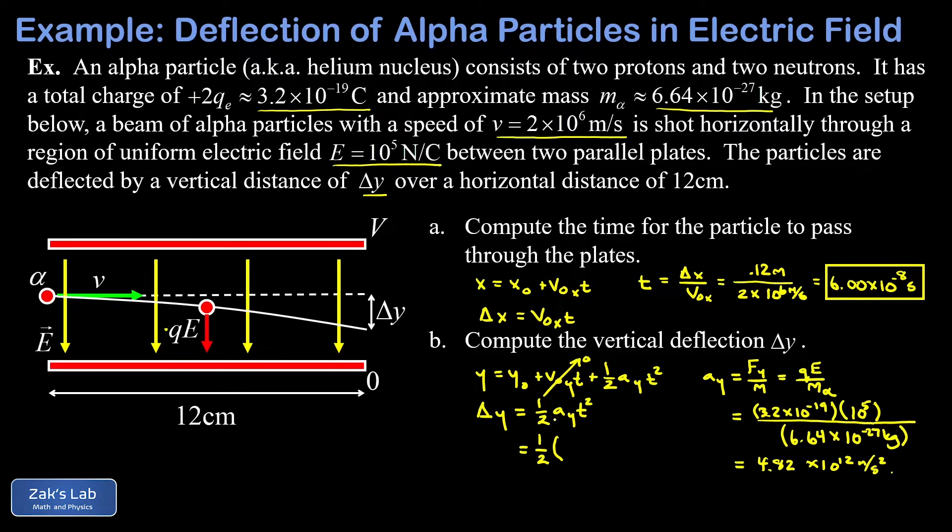So we plug in that acceleration, 4.82 times 10 to the 12th meters per second squared, multiply by the time for the process, which was 6 times 10 to the negative eighth all squared.